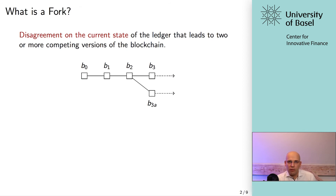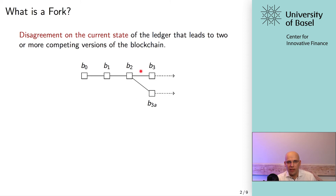Let's start with a quick definition. What is a fork? A fork is simply a disagreement on the current state of the ledger that leads to two or more competing versions of the blockchain. This may be just for a short amount of time and then get resolved, but it can also be persistent — for some fork types, it may actually lead to two competing blockchains that coexist and create new crypto assets, for example.